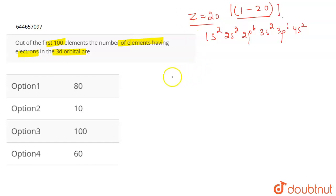But if we talk about atomic number 21, the electronic configuration becomes 1s2, 2s2, 2p6, 3s2, 3p6, 4s2, 3d1.